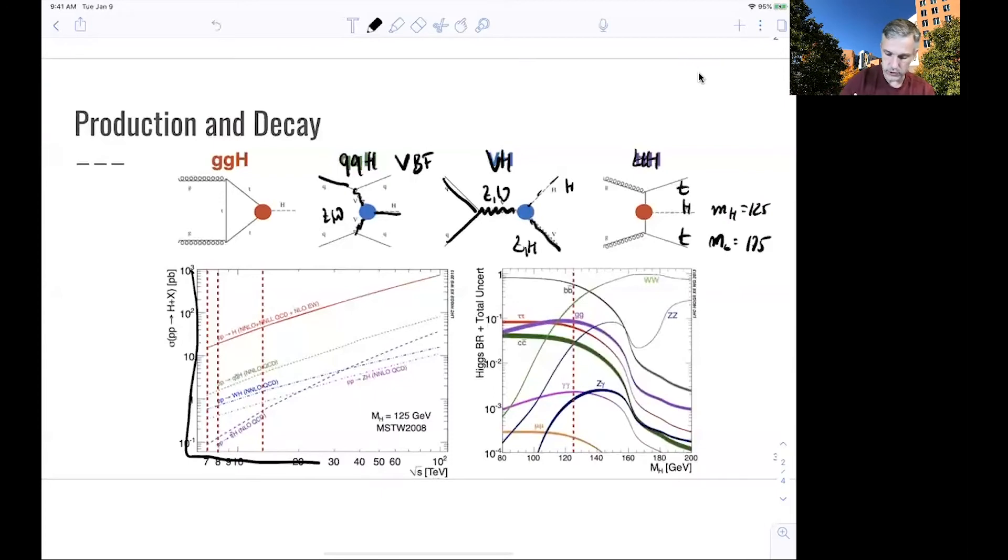This plot shows the production cross-section as a function of center of mass energy. The Large Hadron Collider, the LHC, operates currently at 13 TeV. The leading cross-section, which is in the order of tens of picobarns, is gluon fusion.